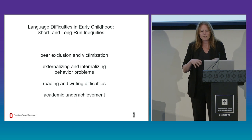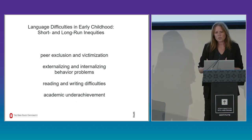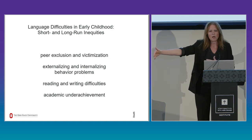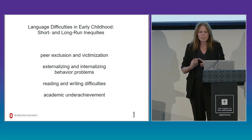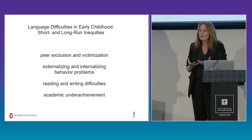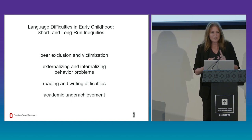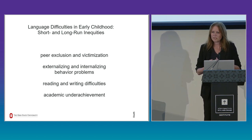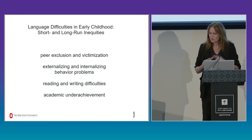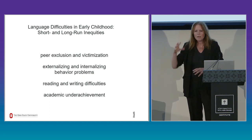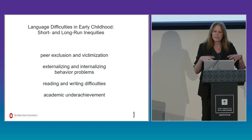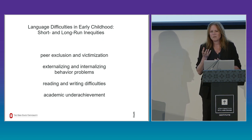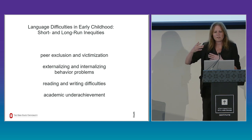Language difficulties in young children are so concerning because they have many adverse outcomes. When kids have poor language skills at three, four, and five, they tend to be victimized and excluded from peer networks — they're not good at entering conversations and say the wrong things. They have a high tendency for peer rejection, behavioral problems including externalizing and internalizing, high susceptibility for reading difficulties, and chronic academic underachievement. When we see language difficulties emerging in this period of rapid brain development, we must be quite concerned.